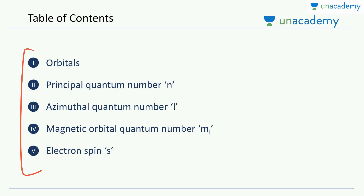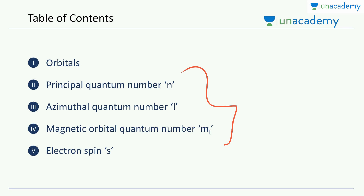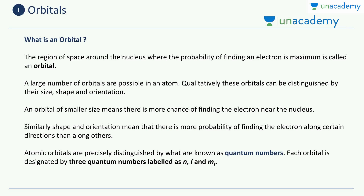We will be taking up five topics of discussion. Firstly, I will introduce the topic of orbitals — this is different from an orbit. Then we will see the three quantum numbers: the principal quantum number, the azimuthal quantum number, and the magnetic orbital quantum number. These are the three quantum numbers we had earlier been introduced to. And finally, we will look at the fourth quantum number, which is the electronic spin. So let's begin with our discussion of orbitals.